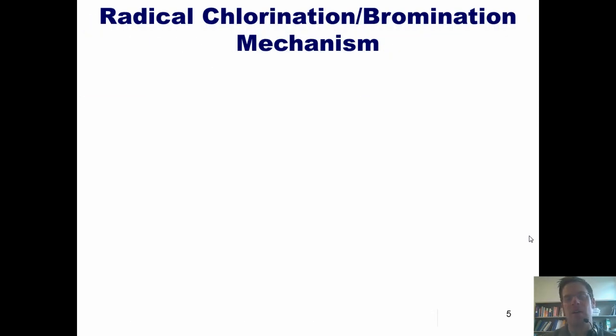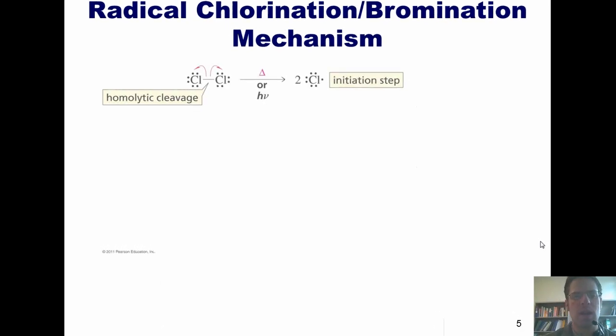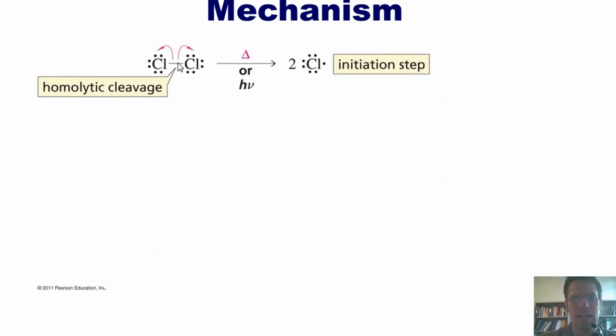With that as background, I can now show you the mechanism by which radical chlorination and bromination of alkanes proceeds. If I've got chlorine gas and I treat it with light or heat, I can get these two individual chlorine atoms to undergo radical or homolytic bond cleavage in which each of them takes one of these two electrons to itself. That thereby gives me two chlorine radical atoms, that is, two chlorines that each have one unpaired electron.